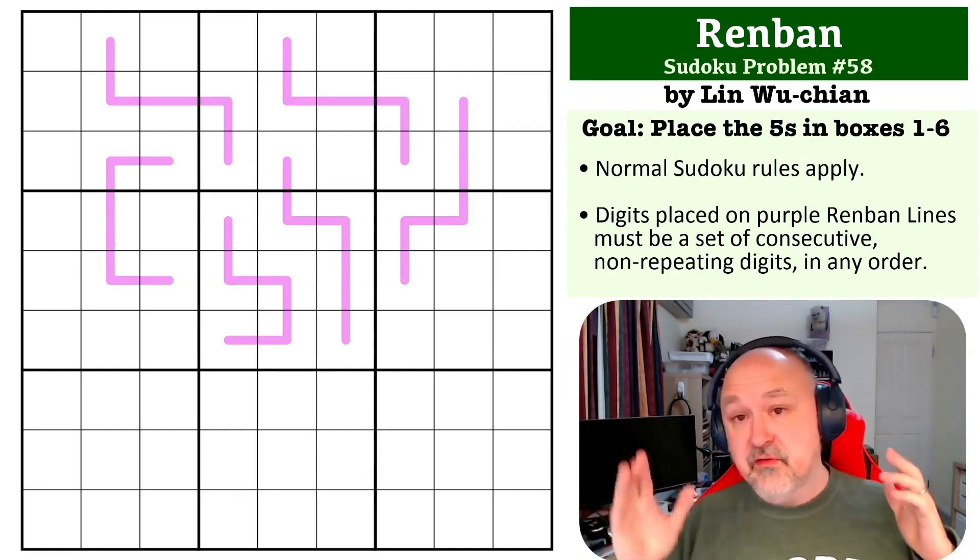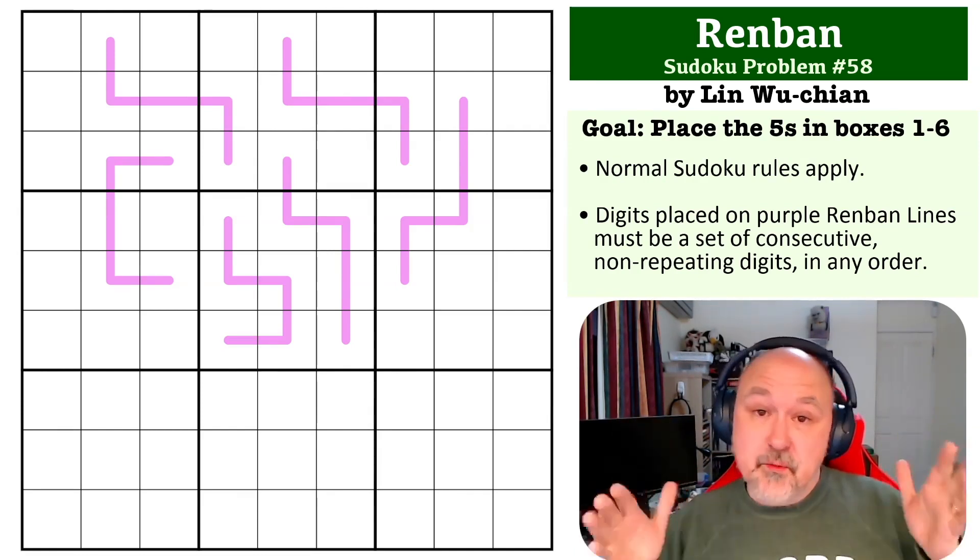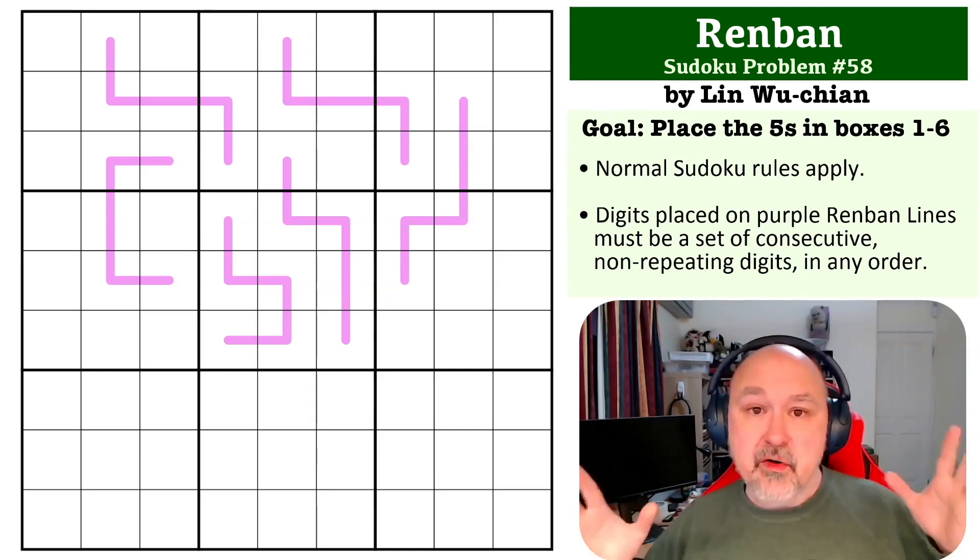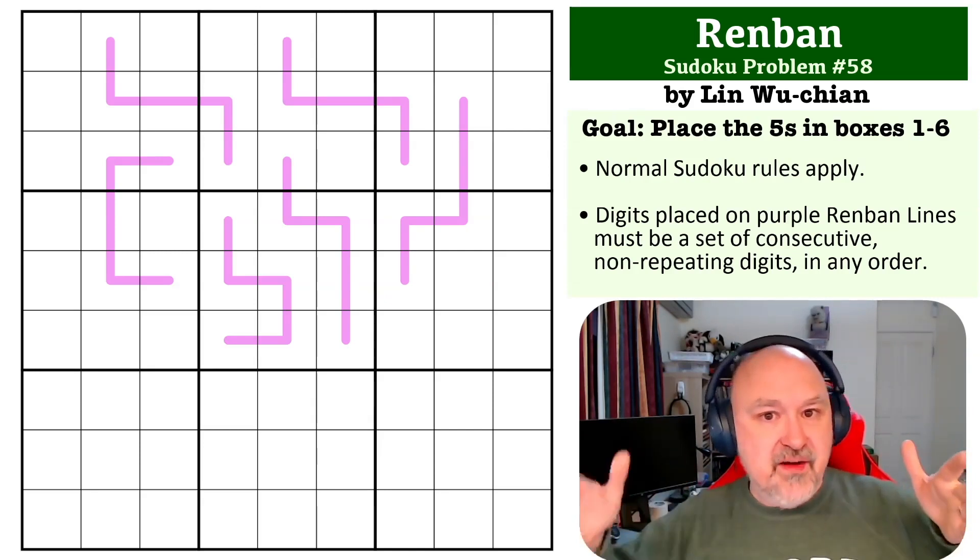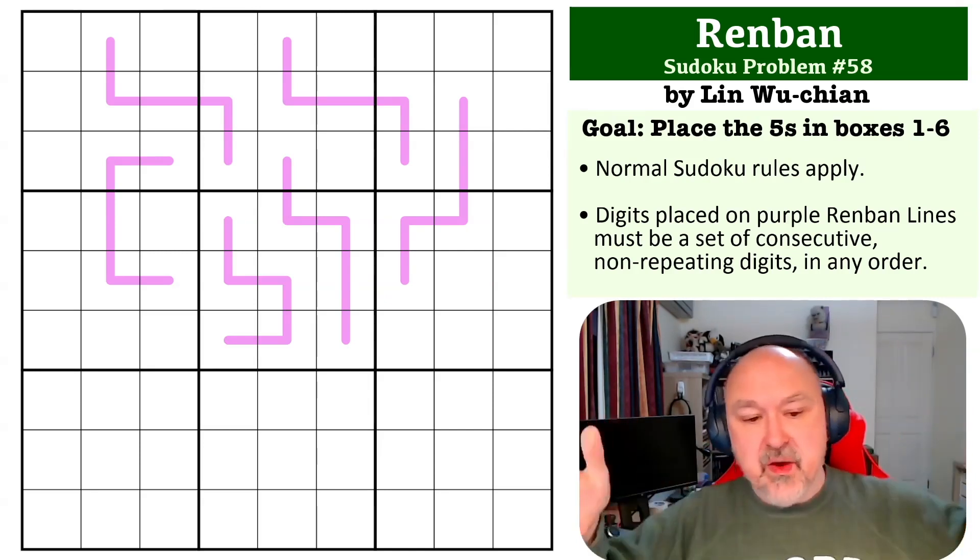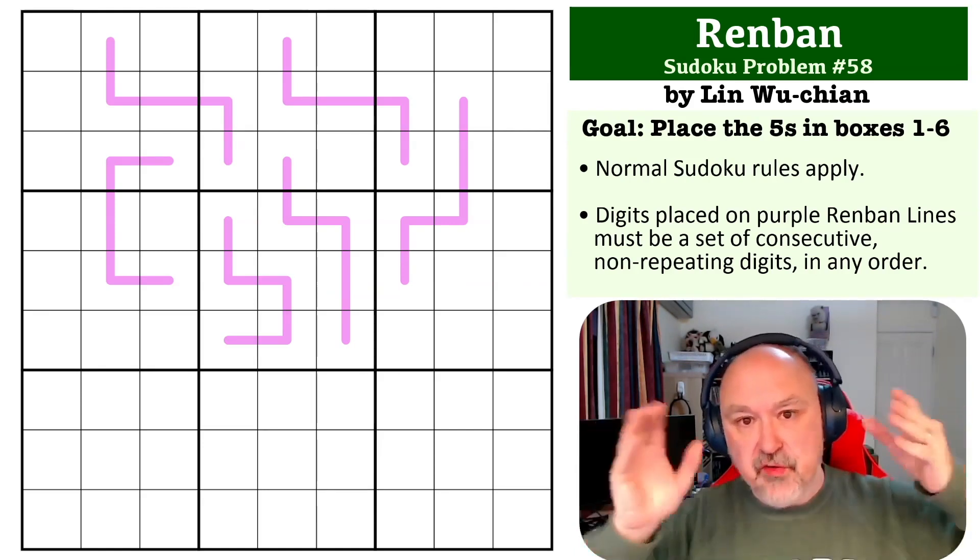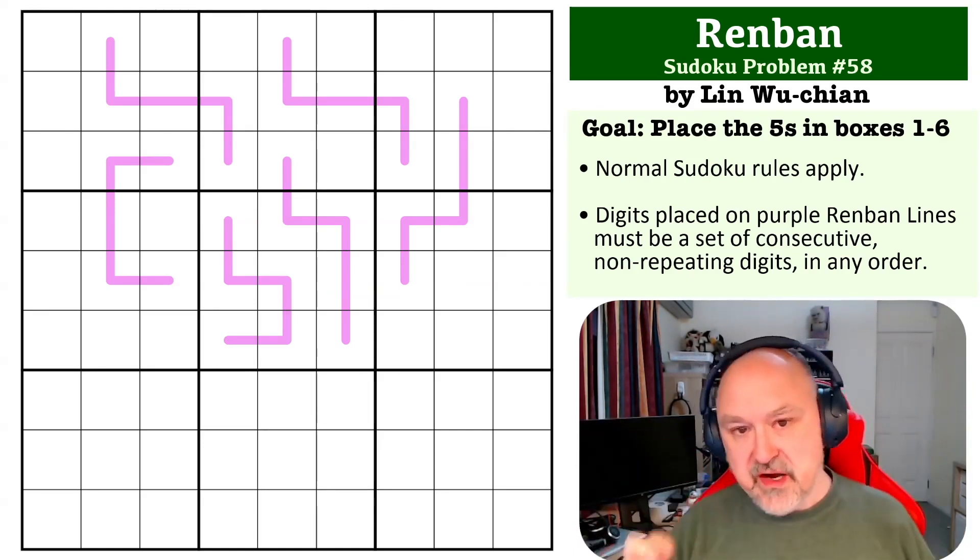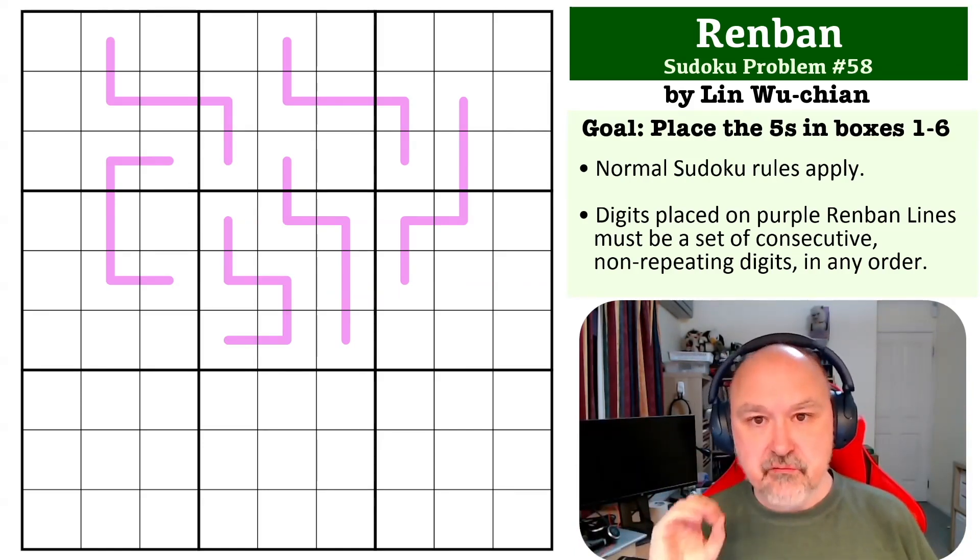If you start with a nine and go down nine, eight, seven, six, five, you will end up with a five on the line. Anywhere in the middle, if you start with two: two, three, four, five, six, you end up with a five. Any way that you put a run of one to nine, if you grab any five consecutive digits you will get a five. So any five length Renban line must contain a five.